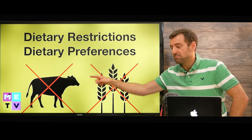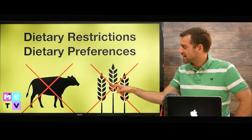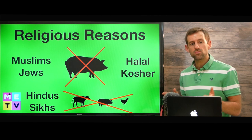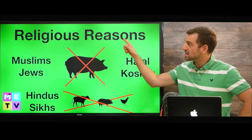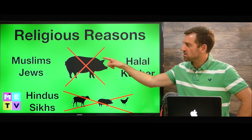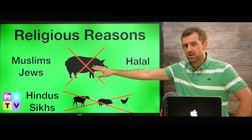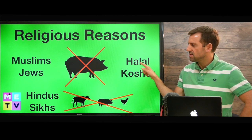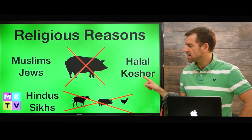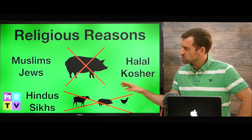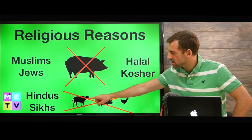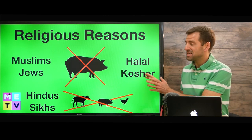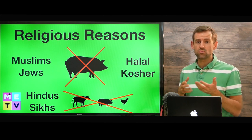Some people can't eat meat, or some people can't eat gluten. Some people have dietary restrictions for religious reasons. For example, Muslims and Jews can't eat pork. Muslims can only eat food that's halal, and Jews can only eat food that's kosher. There are also a lot of Hindus and Sikhs that can't eat any meat. So you need to be sensitive to people's religious beliefs.